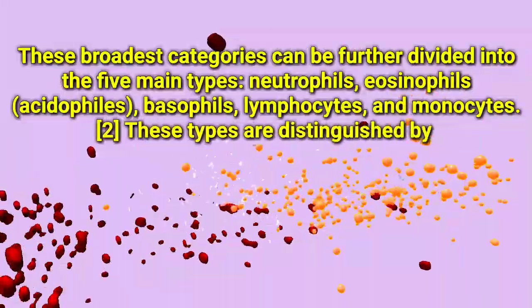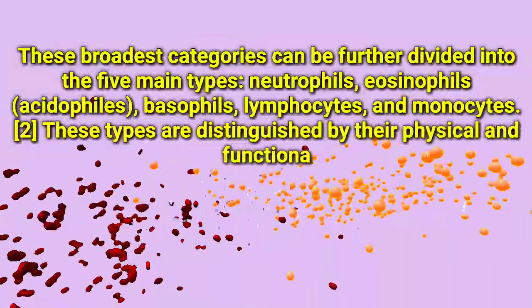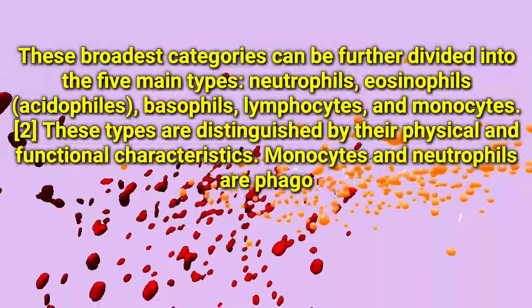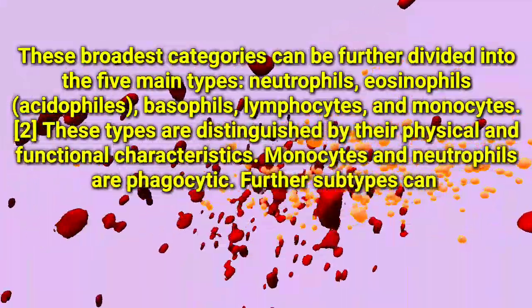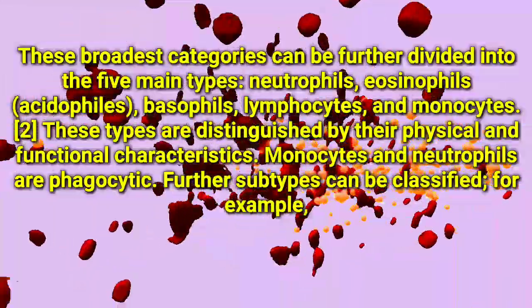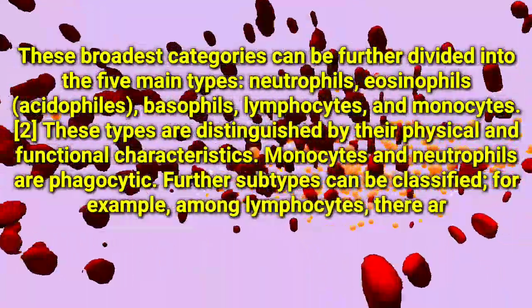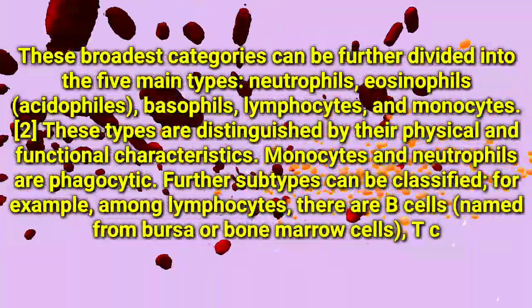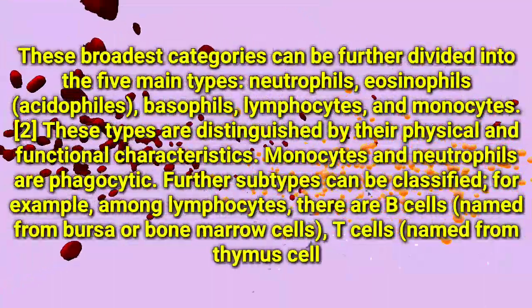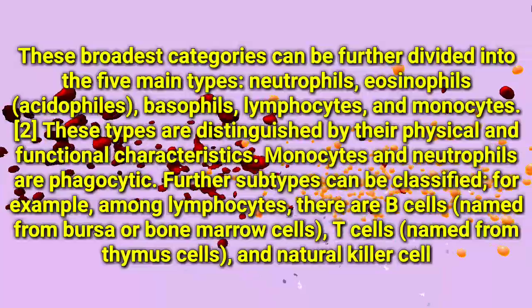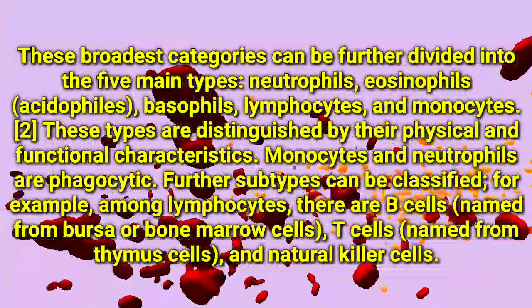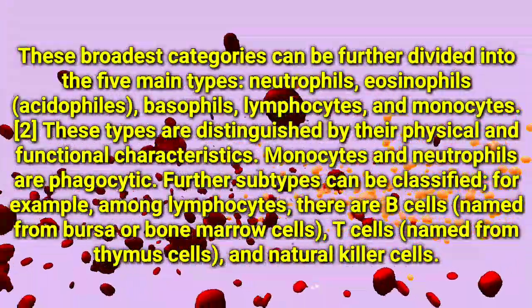The five main types of white blood cells are neutrophils, eosinophils, basophils, lymphocytes, and monocytes. These types are distinguished by their physical and functional characteristics. Monocytes and neutrophils are phagocytic and can be further subtyped.